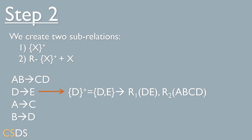In the next step, we create two sub-relations: the first relation is the closure of X, and the second relation is the original relation minus the closure of X, plus the attribute X. For the functional dependency D→E, the closure of D is DE. So R1 is DE, and R2 is ABCDE minus DE plus D, which gives us ABCD.